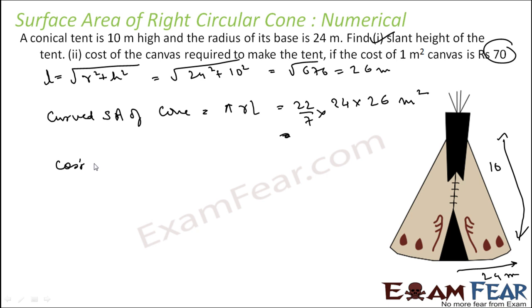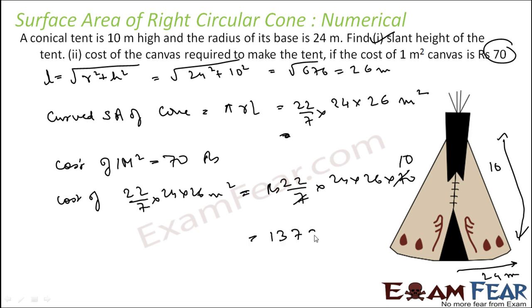So cost of 1 meter square is what? 70 rupees. So, cost of this many meter square is what? 22 by 7 into 24 into 26 meter square, you will see a number into 70 and that will be rupees. So, in this case, it gets cancelled. So, you solve this, you get 137280 rupees, pretty easy. This question is a little confusing because in this case, they have not mentioned whether the base has to be created or not. So, we assume that the base is not required.